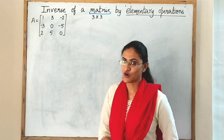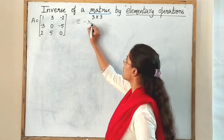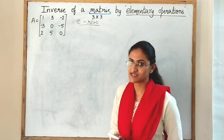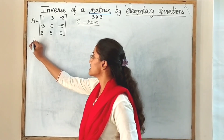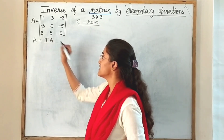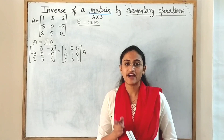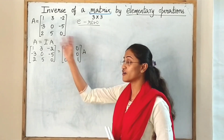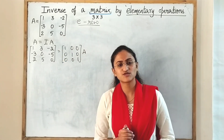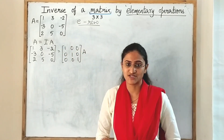Look at the first problem. We shall now use elementary row operations to find the inverse of this matrix. We shall start with our first step, that is A is equal to I into A. We shall follow a small pattern to find the inverse of this 3x3 matrix, because most students struggle to find the inverse of this big matrix.